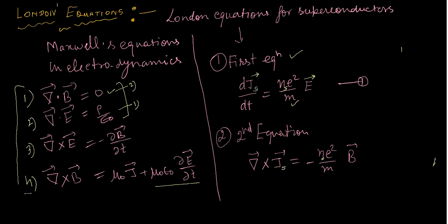A common confusion exists between B and H. B is the magnetic flux density and H is the magnetic field intensity. The relation between these two quantities is: B equals mu naught times H. So these are six equations total — four for normal conductors and two for superconductors — and these two are known as London's equations.